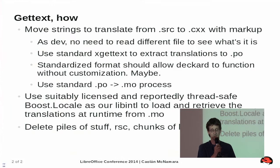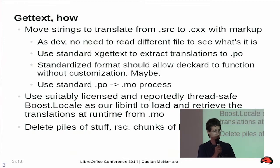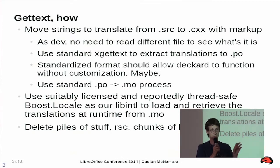We'd do some markup like you get from standard gettext — maybe an underscore or perhaps something else — and then as a developer you no longer have to look up what the translation actually is; it's right there in front of you. Use the standard xgettext application to extract translations to a .po file, which already has support for .ui files. Such a standardised format would allow Deckard, which gives you an in-place view of what you are translating when it's based in a .ui file format, so your translator can see in the website what they are translating.